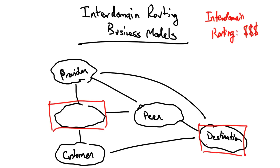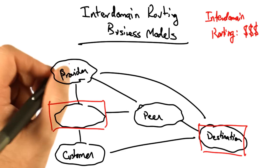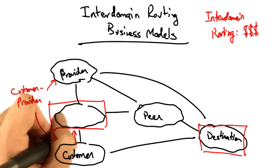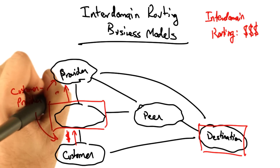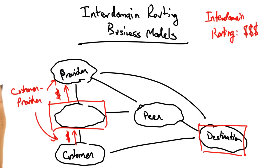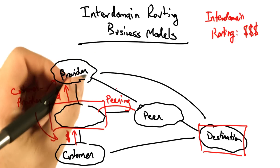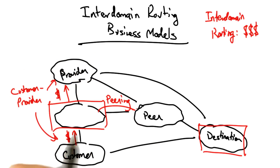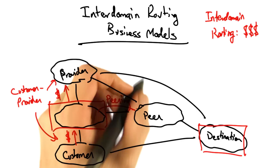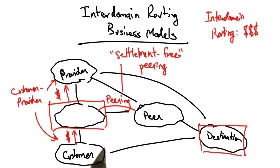Consider an AS that wants to send traffic to a particular destination. In the internet, there are two different types of business relationships. First, a customer-provider business relationship, where money flows from customer to provider regardless of the direction that traffic flows. The other type is a peering relationship, where an AS can exchange traffic with another AS free of charge — sometimes also called settlement-free peering.